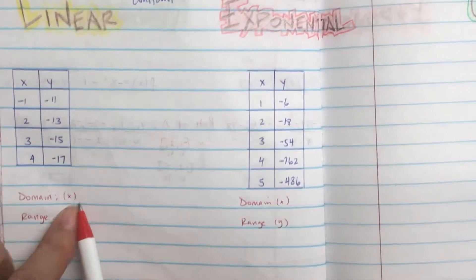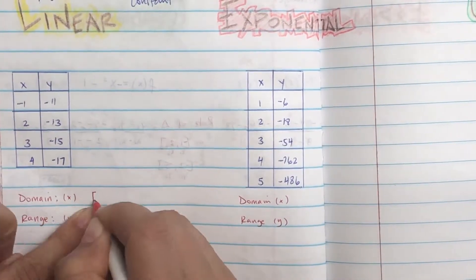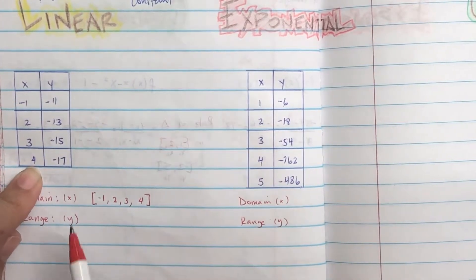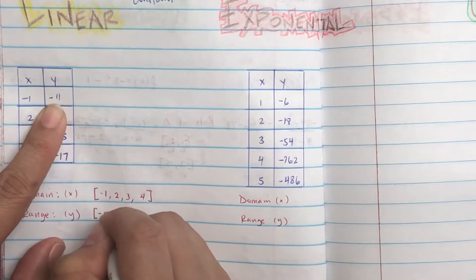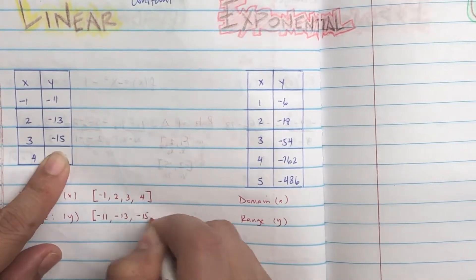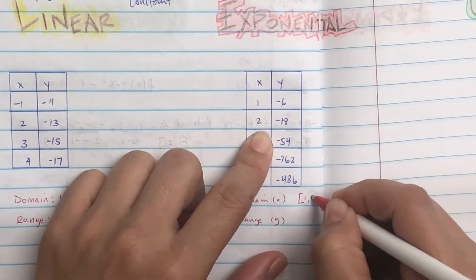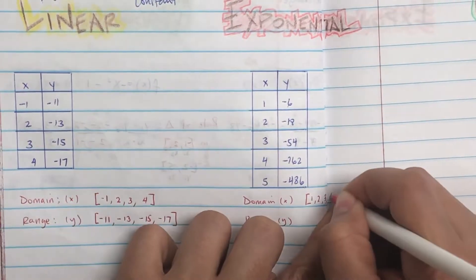Now we're looking at domain and range from a table. Domain from a table is just whatever your x values are, in order, and then you don't repeat. Close parentheses. Same thing with range. It's just all the numbers there in order. So this one's going to be 1, 2, 3, 4, 5. So that's it, close parentheses because it includes those numbers.